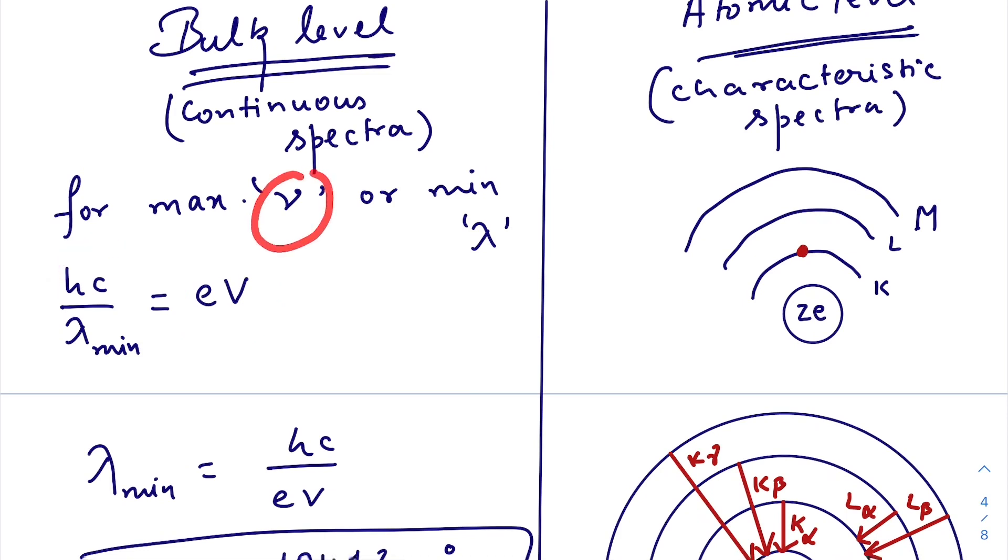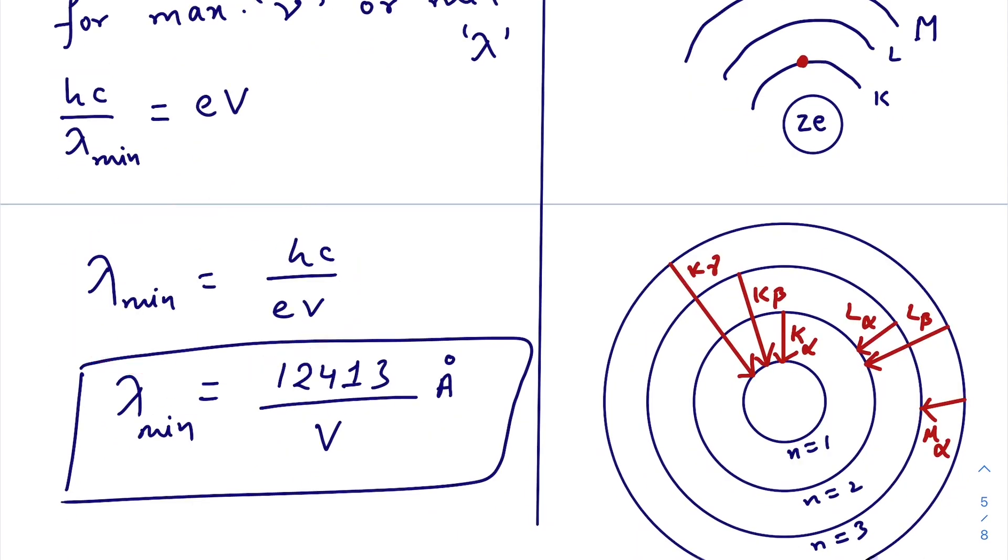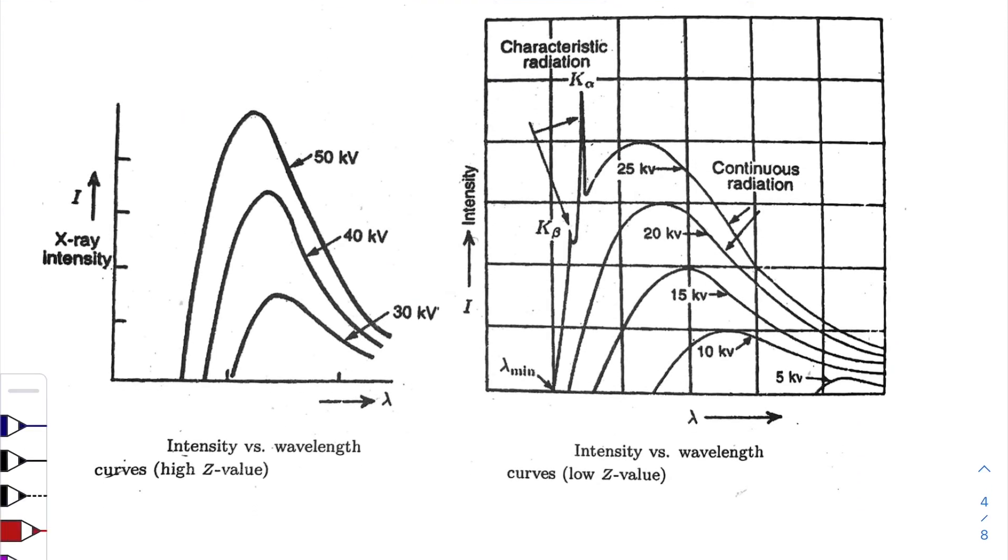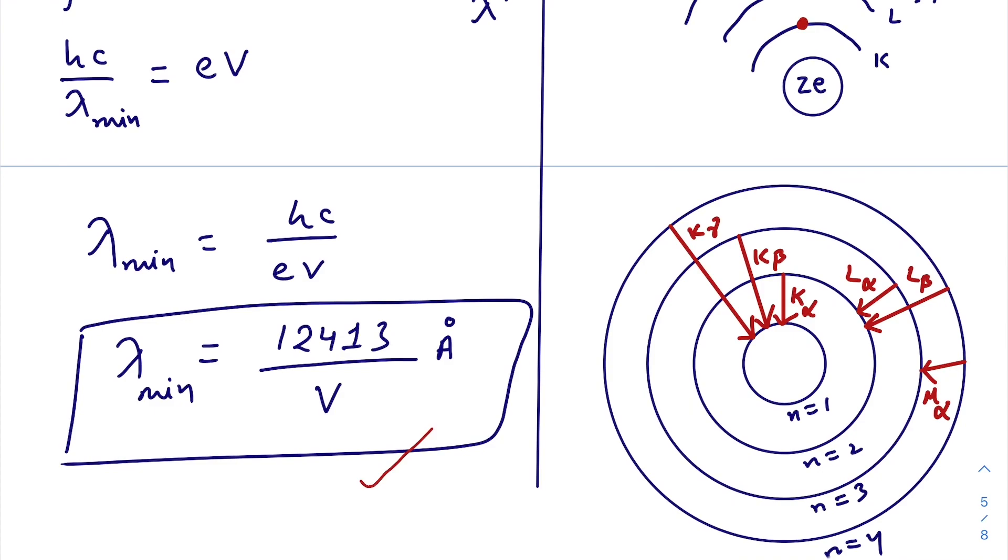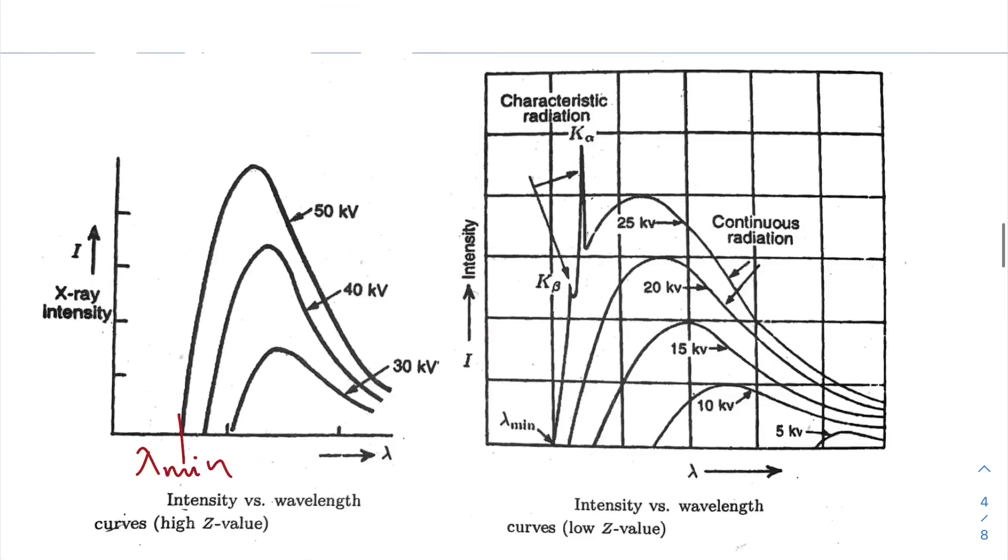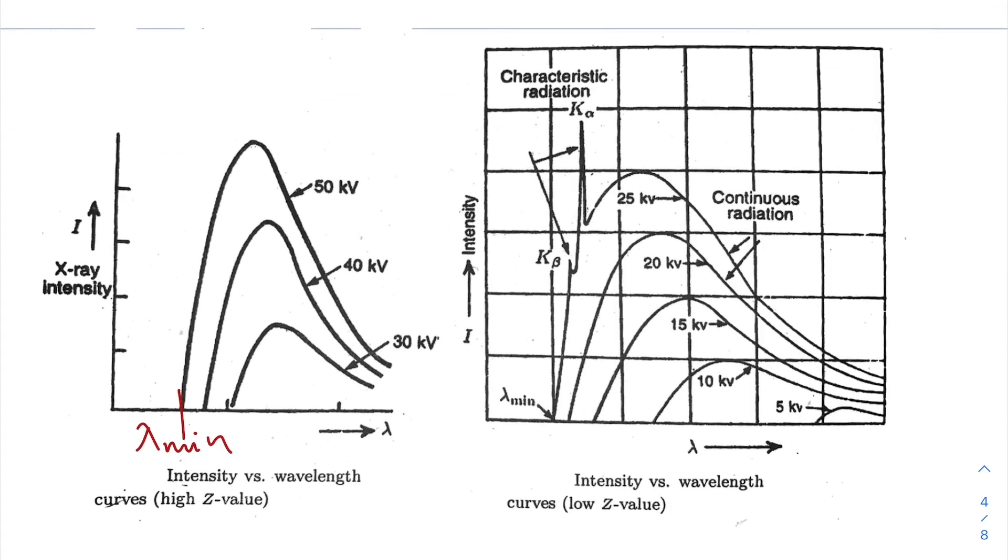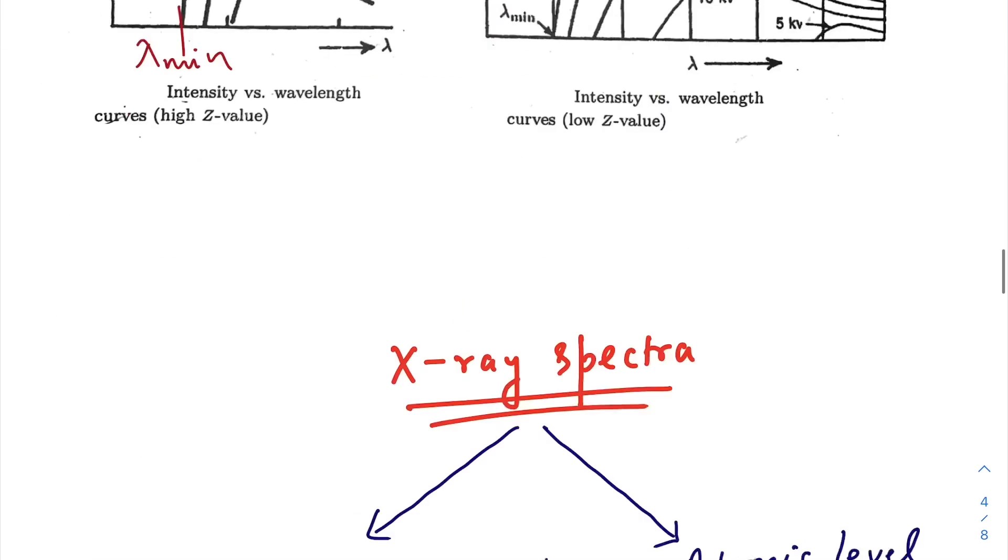Some fraction of the total energy will be utilized for creating the radiation. For maximum condition, considering that whole of this energy is utilized for radiation, that will create maximum frequency hence minimum wavelength. So h c by lambda min equals e V. That gives you the cutoff wavelength. From here we can see that the probability of electrons to lose all the energy in the form of radiation is zero, and probability to lose all the energy and not creating radiation is also zero. So between two minimas there should be one maxima. This explains the continuous spectra of X-rays.